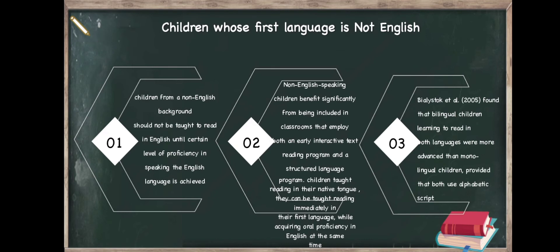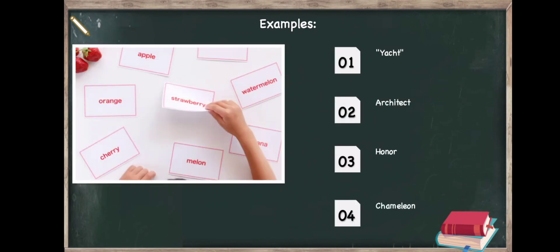Sublexical refers to the constituent parts of a word. For example, when children are proficient in speaking even simple English words like 'banana,' 'mango,' or 'good morning,' the sublexical structure of those words becomes familiar and helps them learn the alphabetic principle, enabling them to read and understand content. Words like 'yacht,' 'architect,' 'honor,' and 'chameleon' are very difficult to correctly identify even in context or on first exposure if they are not already in a person's spoken lexicon.